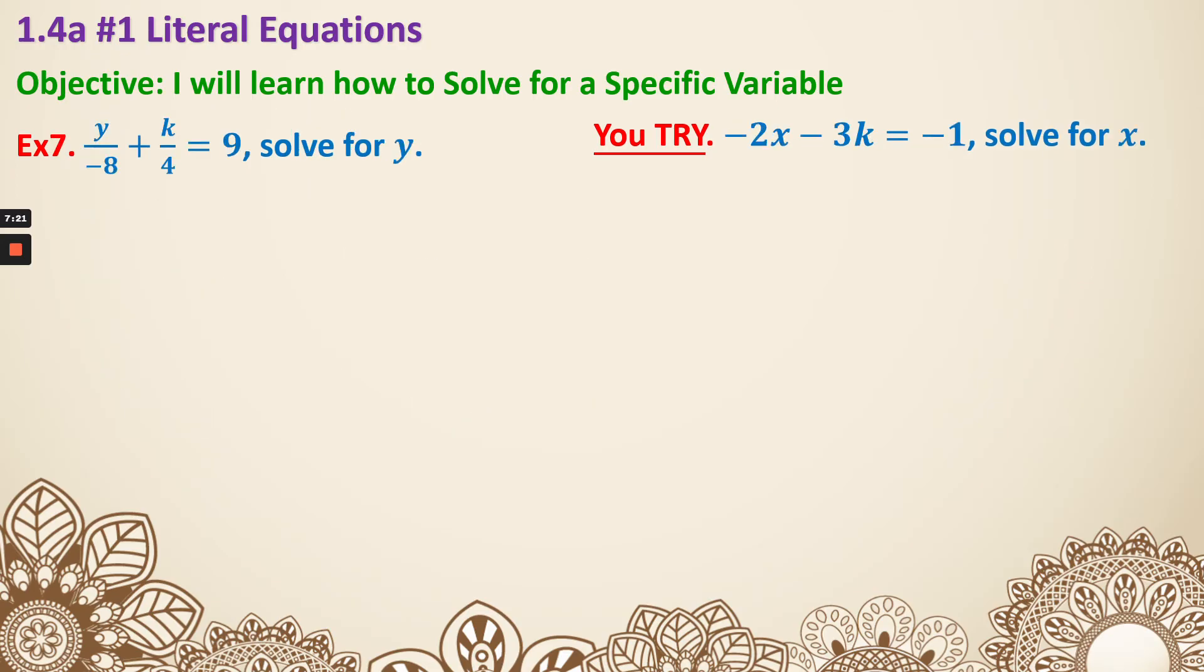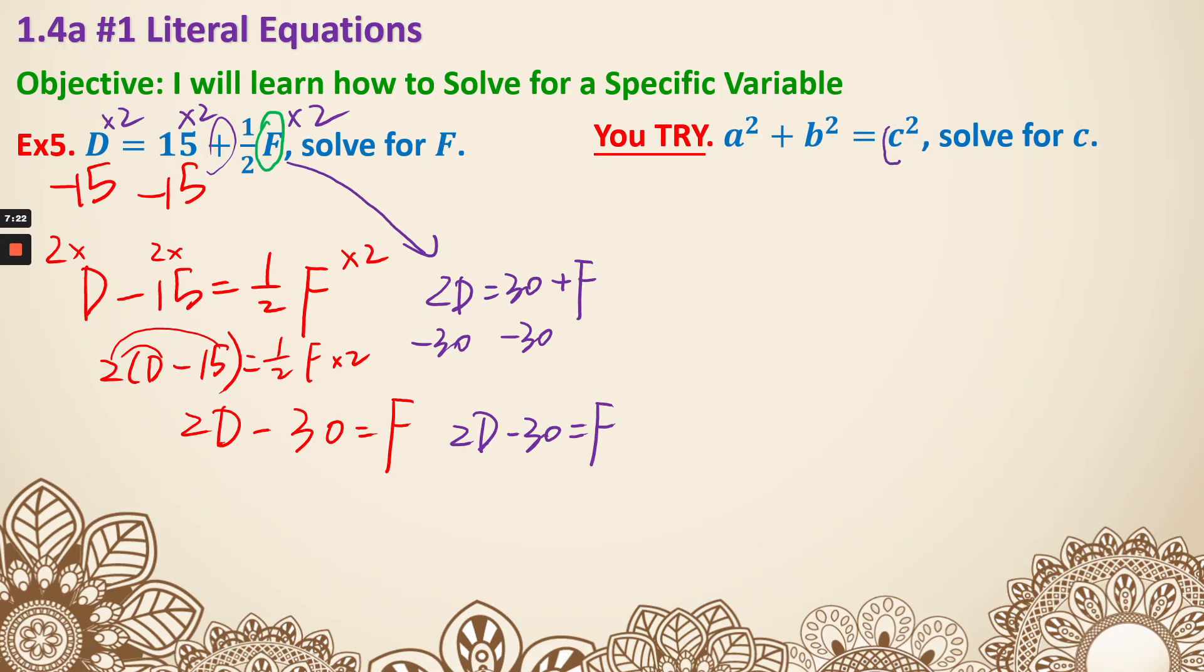Next, number 6. We are solving for c. That means we're trying to get rid of the square. In order to get rid of the square, we are going to take square root on both sides. If that cancel, we got c = √(a² + b²). Next.